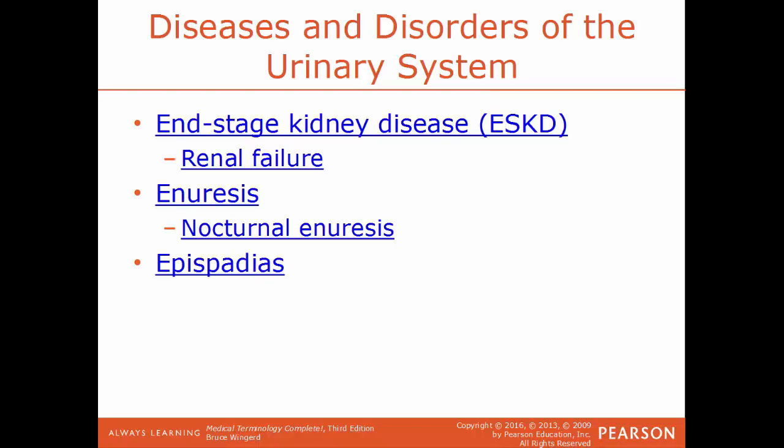Enuresis is involuntary urination — a good example would be a young child wetting the bed, which would be nocturnal enuresis. Enuresis is different from nocturia: nocturia is the need to wake up and then go urinate at night, so you are aware that you have to go. But enuresis is where you go involuntarily without knowing — you wake up covered in urine.